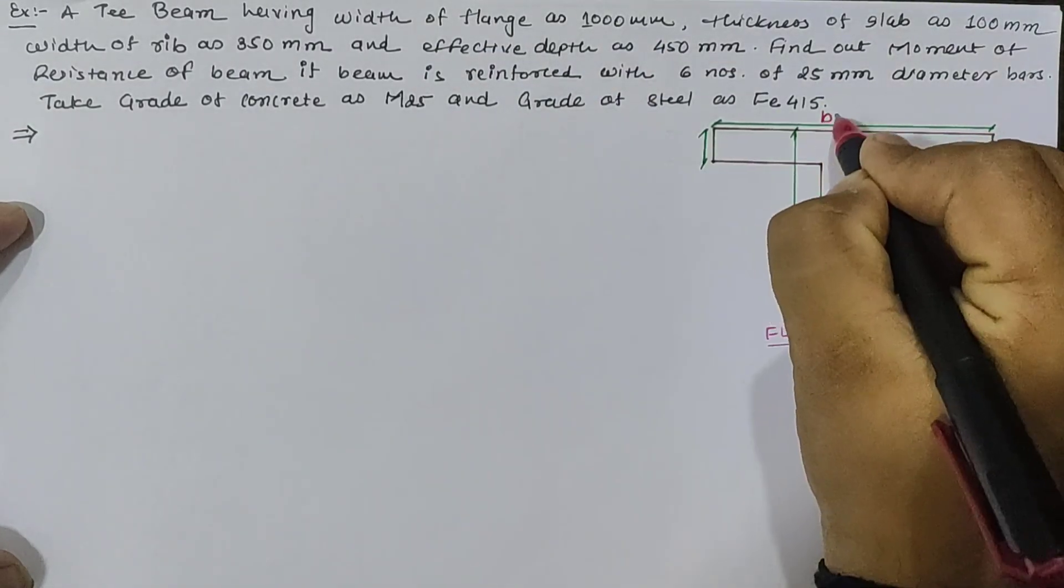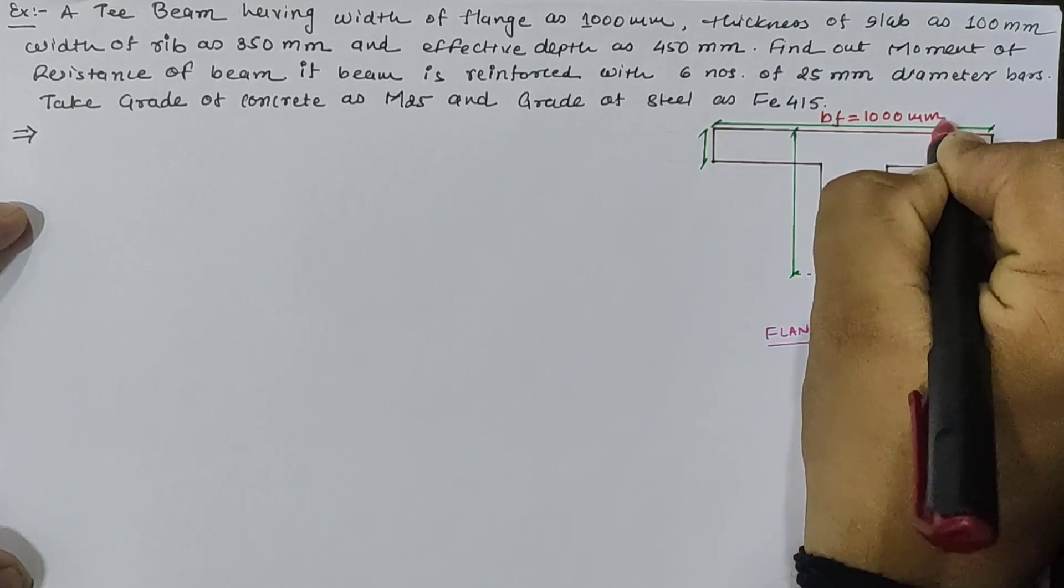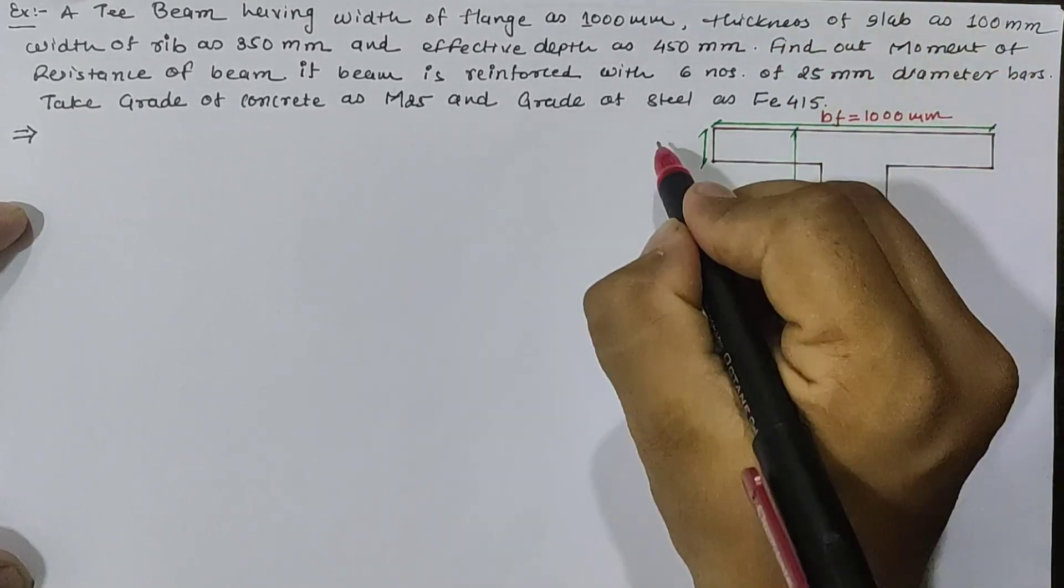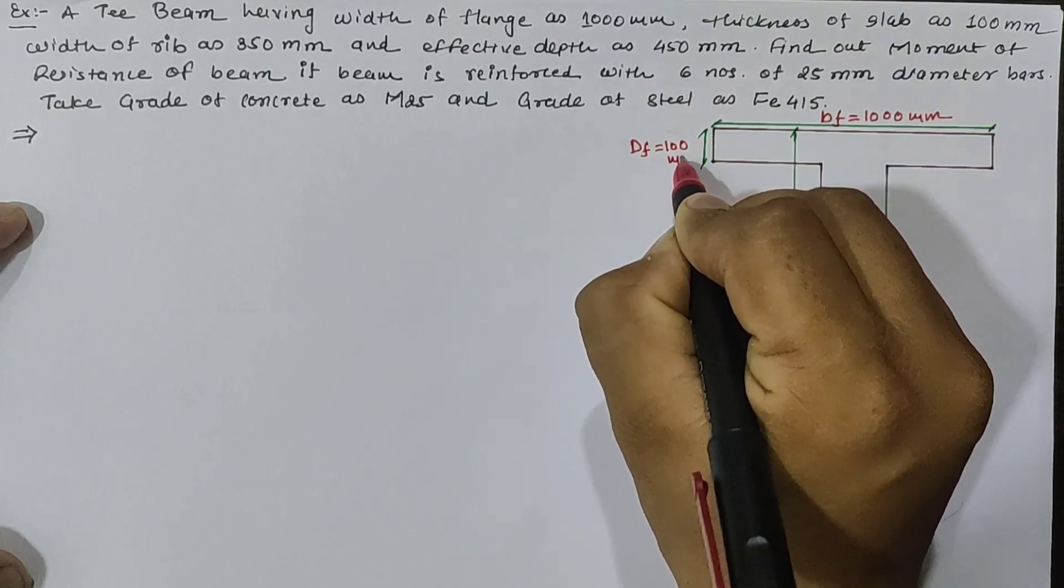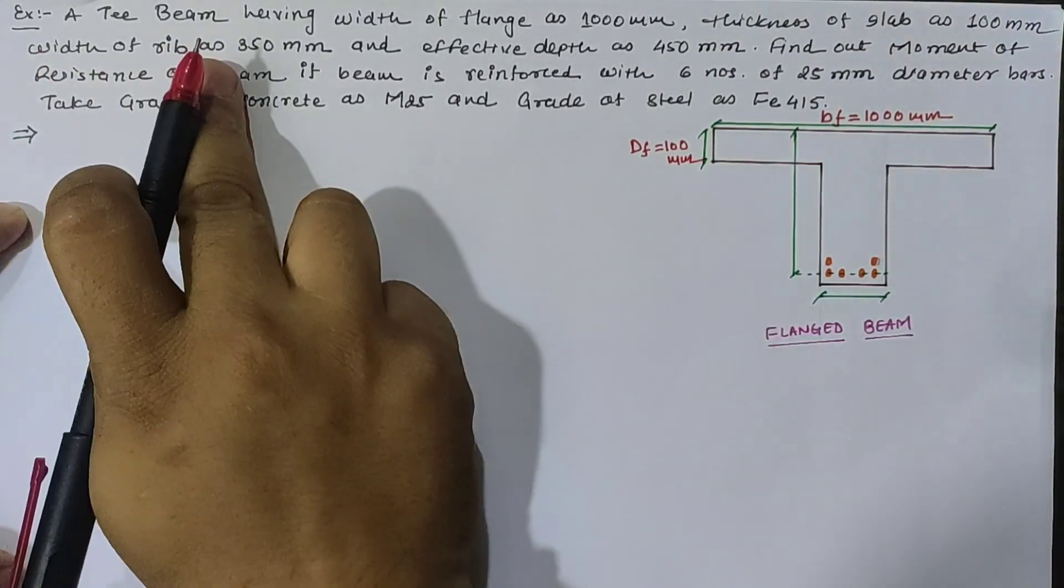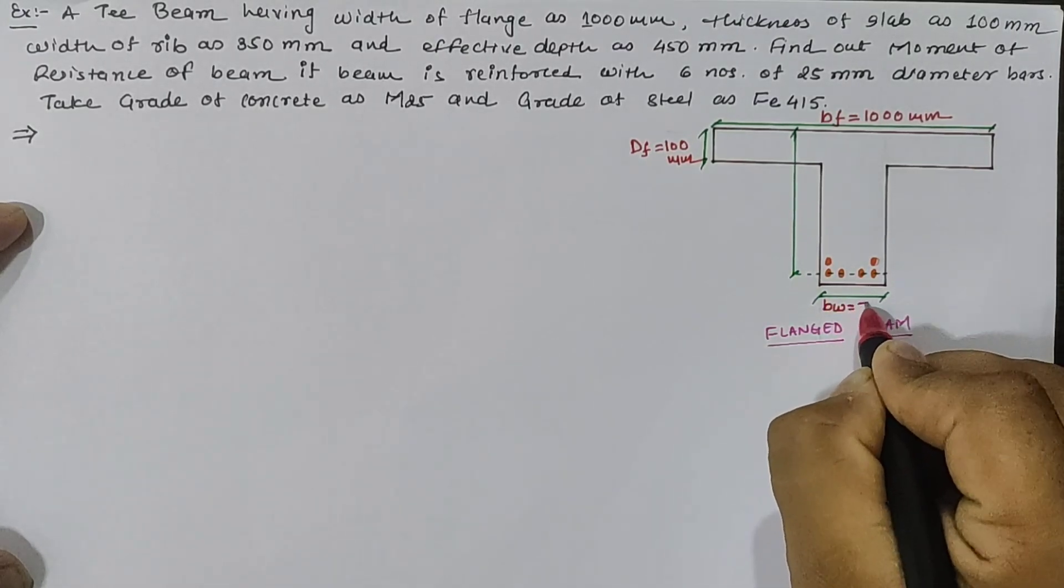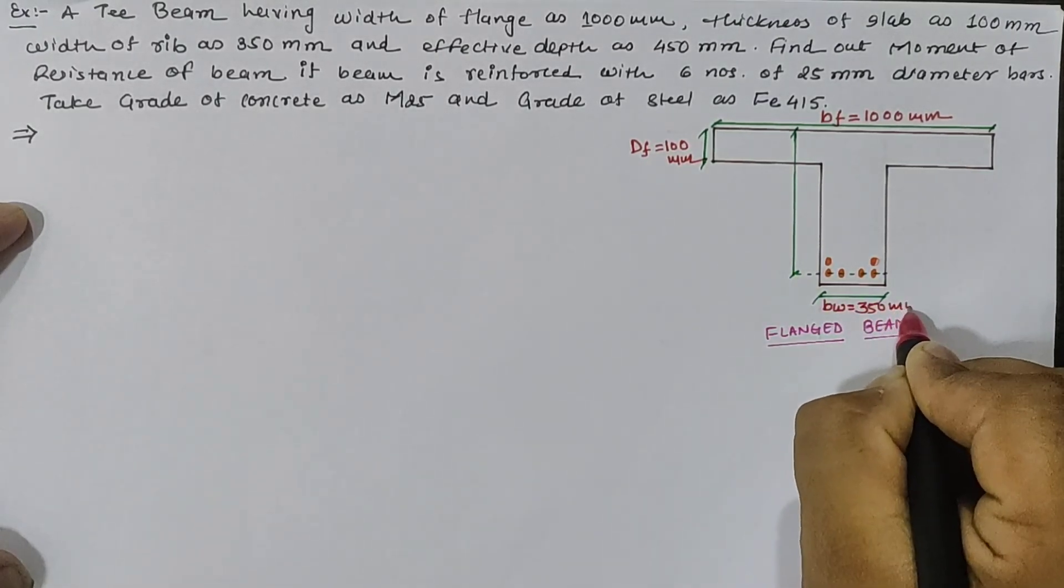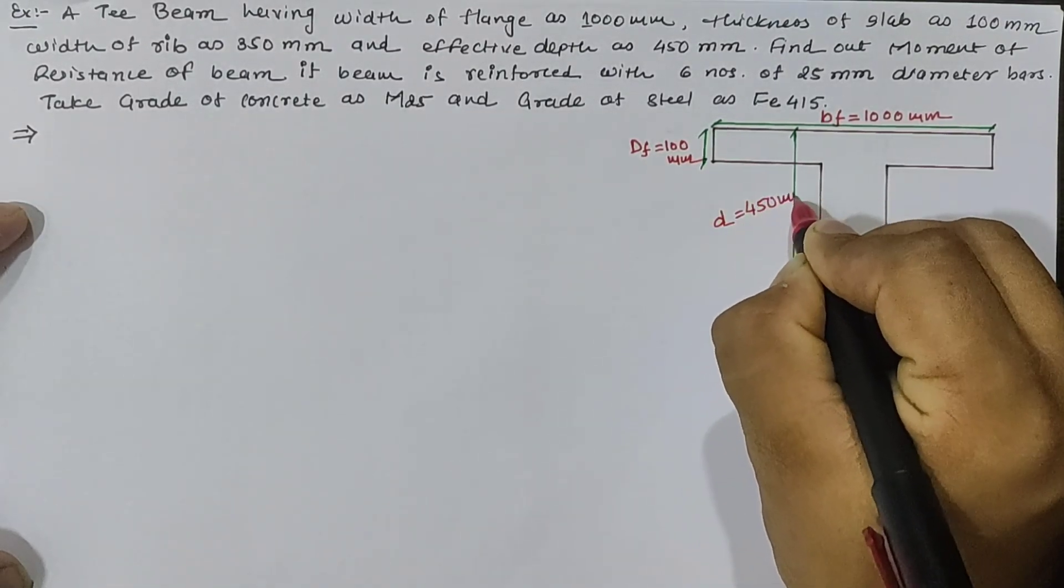First of all, we have given the flange of the beam as width of flange 1000 mm, thickness of slab is given as 100 mm, width of rib or width of web is given as 350 mm, and effective depth is given as 450 mm.